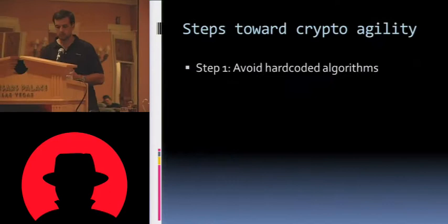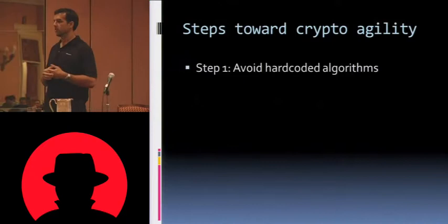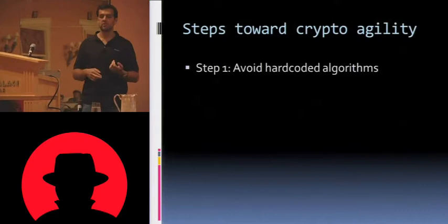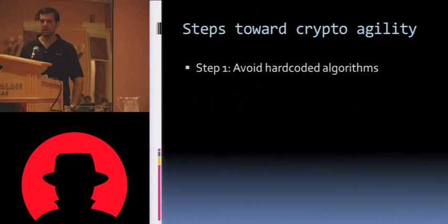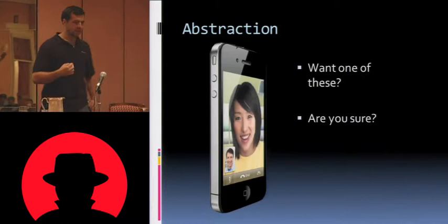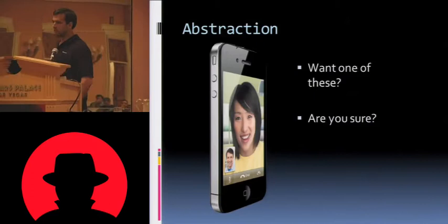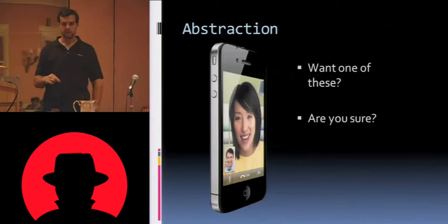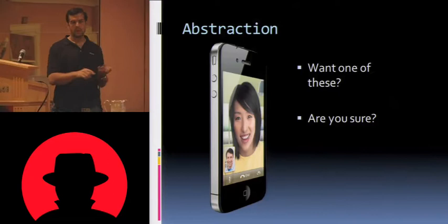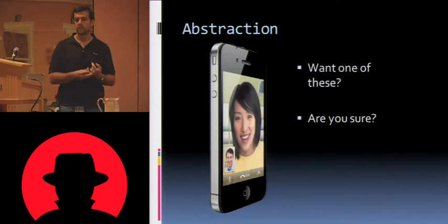So where do we start? The first step toward crypto agility is to avoid any kind of hard-coded algorithm. If you hard-code an algorithm in, you're not going to be able to change it without making a code change. But this is easier said than done. The best way to do this is to take advantage of features of object-oriented code. The four tenets of object orientation are inheritance, polymorphism, encapsulation, and abstraction — and abstraction is the most important one, so we'll cover that first.